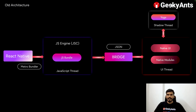Even when an event happens on the native side, it comes back to the JavaScript side through the bridge, JavaScript executes the code, and then passes the message back through the bridge again. This process is time-consuming and asynchronous in nature. Due to that, it has performance issues, and in complex applications it gives low performance. To reduce these limitations, React Native comes with a new architecture.